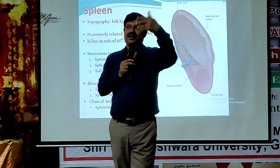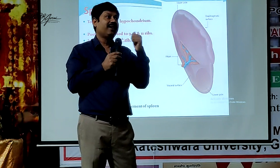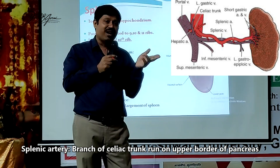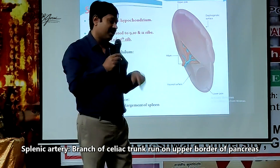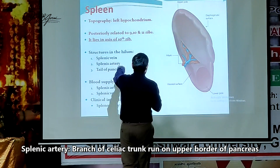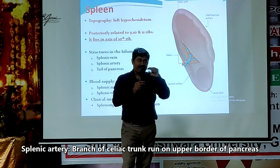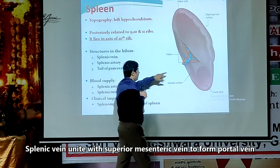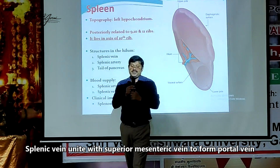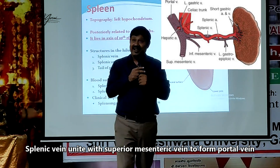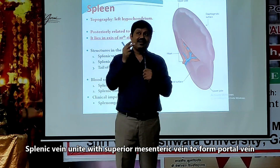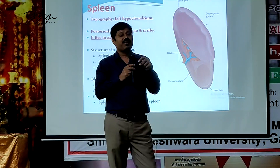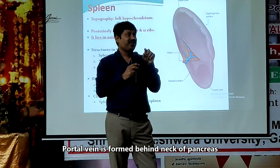The splenic artery is a branch of the celiac trunk, which is a branch of the abdominal aorta — because it is an artery of the foregut. The splenic artery runs along the upper border of the pancreas. The splenic vein joins with the superior mesenteric vein at the posterior surface of the neck of the pancreas.